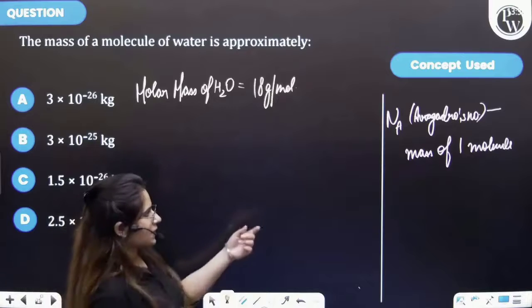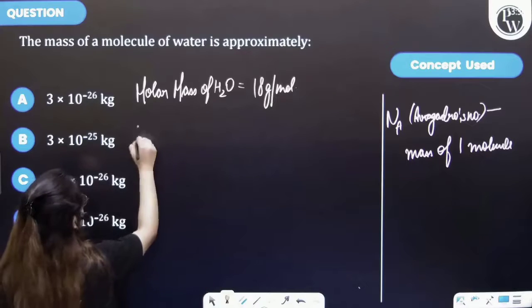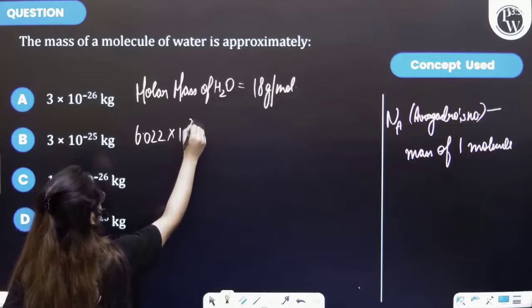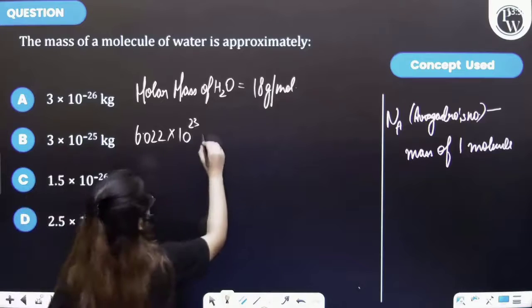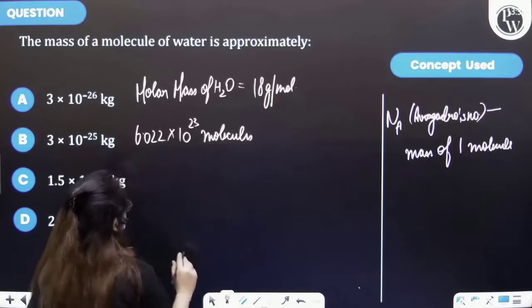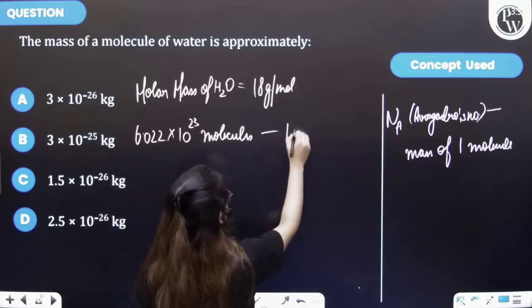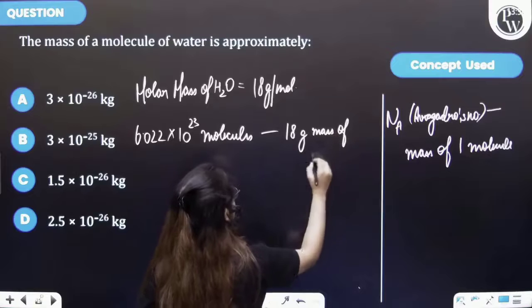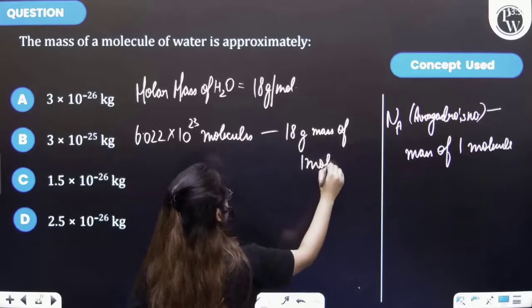Also from the key concept, 6.022 into 10 raised to the power 23 molecules will be having 18 gram mass of one molecule of H2O.